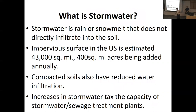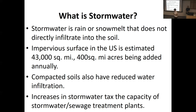What is stormwater? Rain or snowmelt that does not directly infiltrate the soil. Impervious surfaces in the US are estimated at 43,000 square miles, and about 400 square miles is added each year. Paved surfaces prevent water from infiltrating the ground. Compacted soils, very ubiquitous in urban areas, also reduce water infiltration. All this increases the stormwater tax — it taxes the capacity of stormwater and combined stormwater-sewage treatment plants.